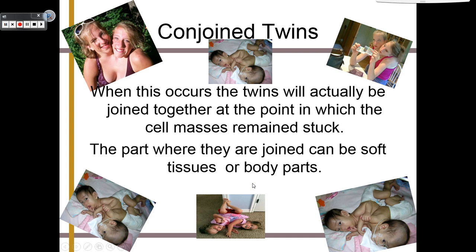When talking about identical twins and how zygotes can split and become someone else, we have to talk about conjoined twins. This occurs when the twins are actually joined together at the point at which the cell masses of the zygote remain stuck. Usually when a zygote splits and becomes monozygotic twins it will split completely, but with conjoined twins it just stops somewhere in the process, and at that point the twins continue to grow as one organism. This is just another example of how nature does not follow our rules or expectations.